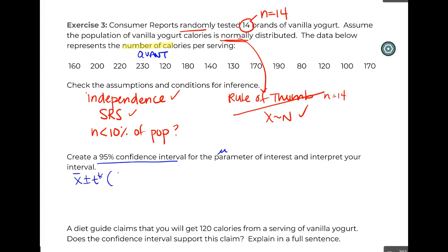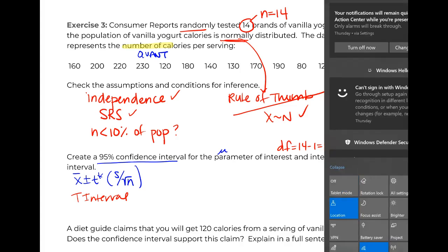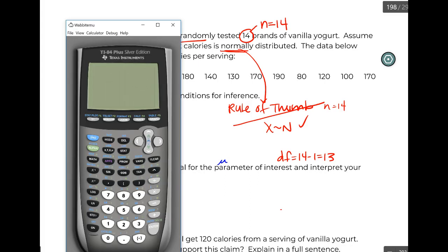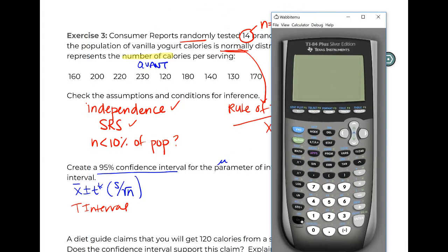We're either doing x-bar plus or minus t-star times s divided by the square root of n with a calculator, where your t-star is going to be based on a degree of freedom of 13, or we're going to be using t-interval. However, you'll notice right away x-bar is not hard to get—we can add everything up and divide by n. S is a little more tricky.